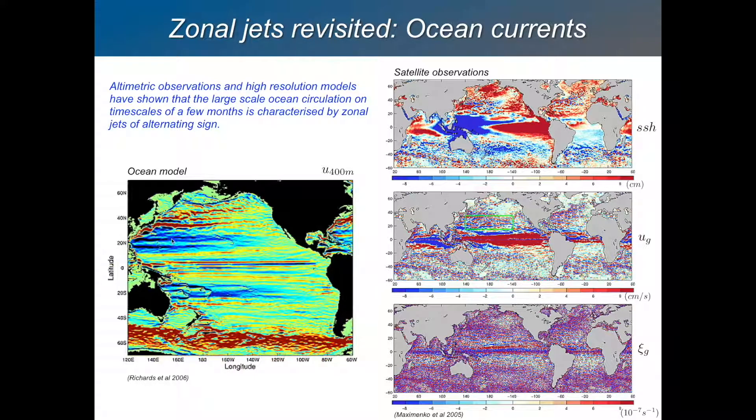There's an eastward jet, a westward jet, an eastward jet, a westward jet, and they are separated by a typical length scale in the meridional direction. That's an ocean model here. It's a little bit more noisy but you can see the same thing using altimetric satellite observations.